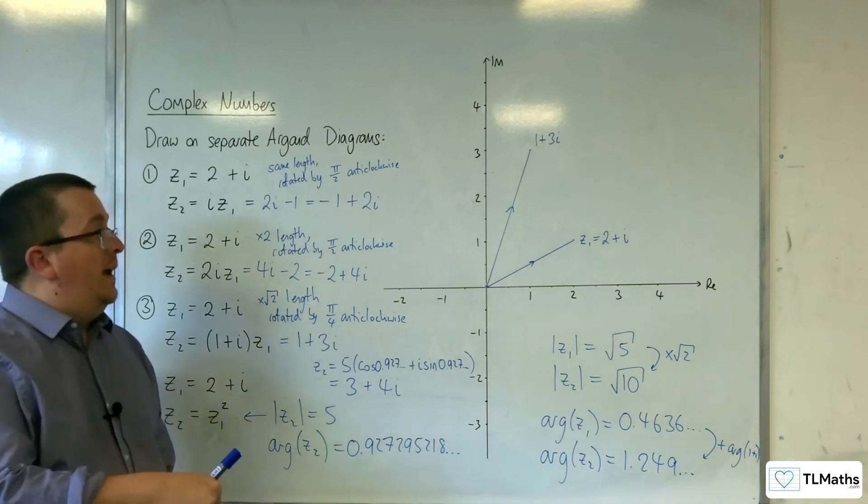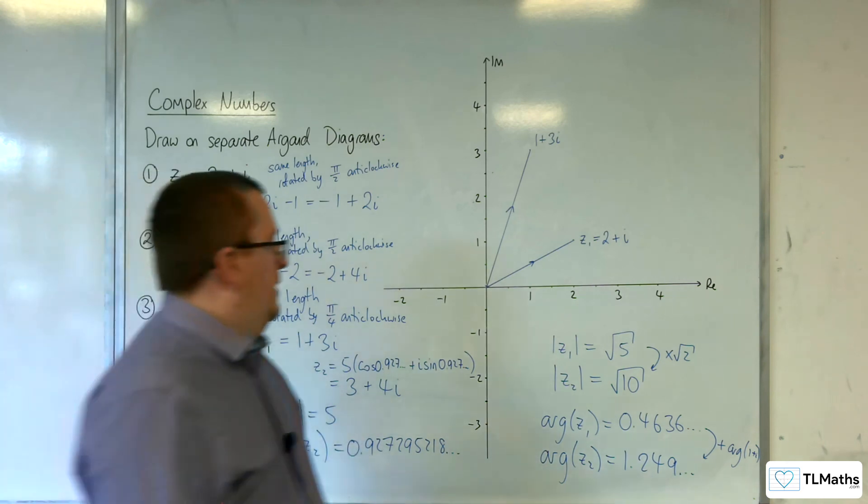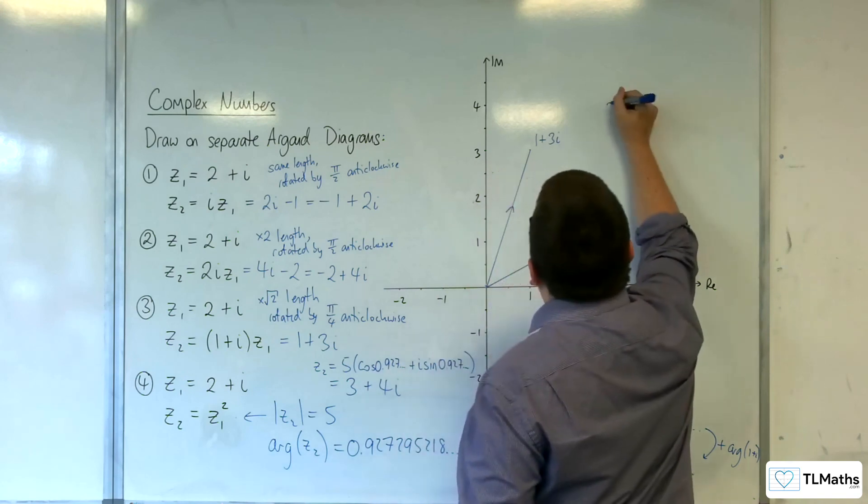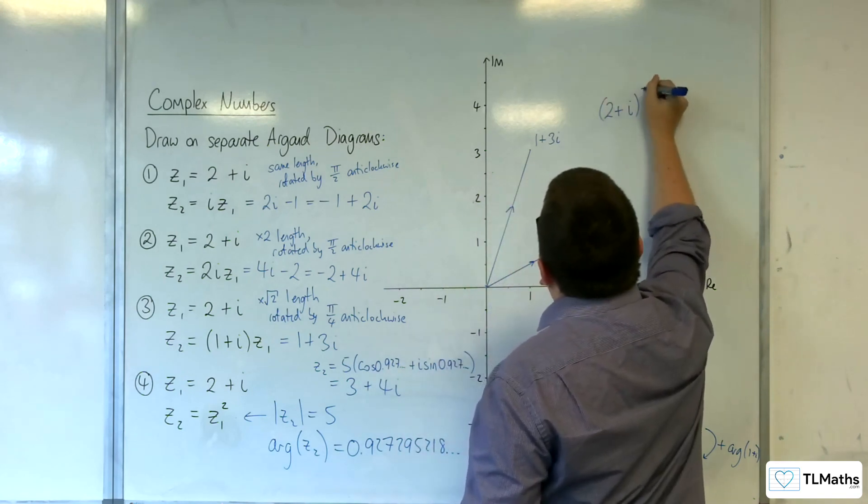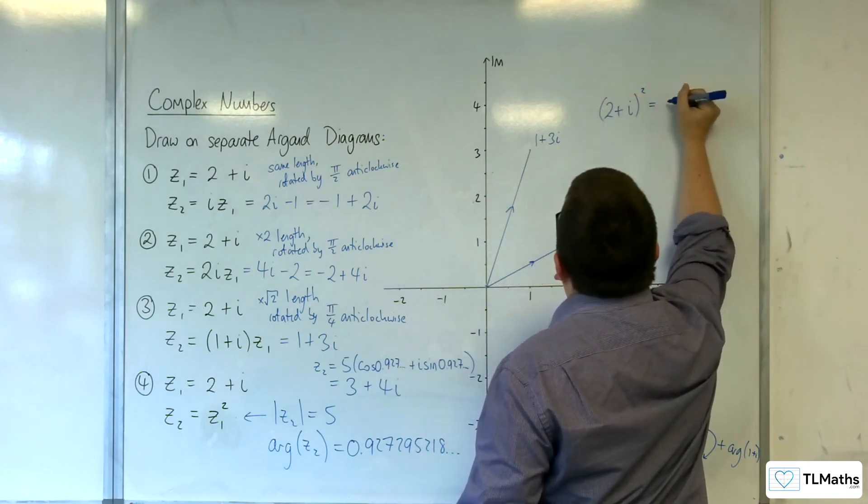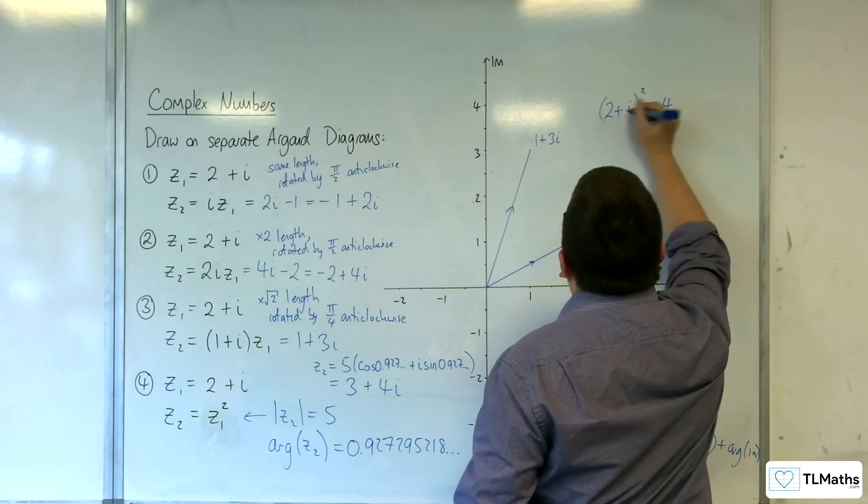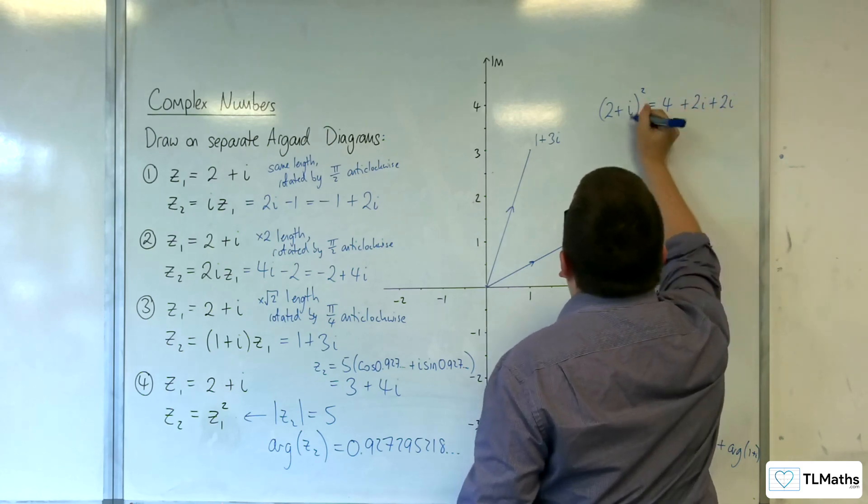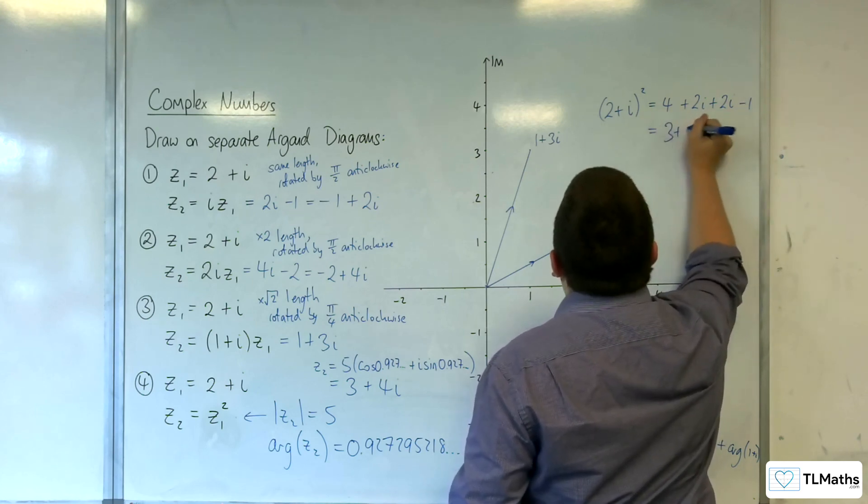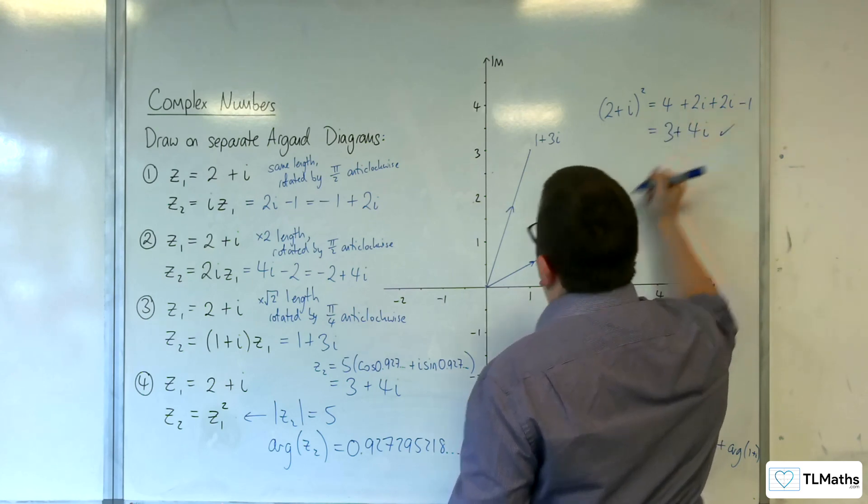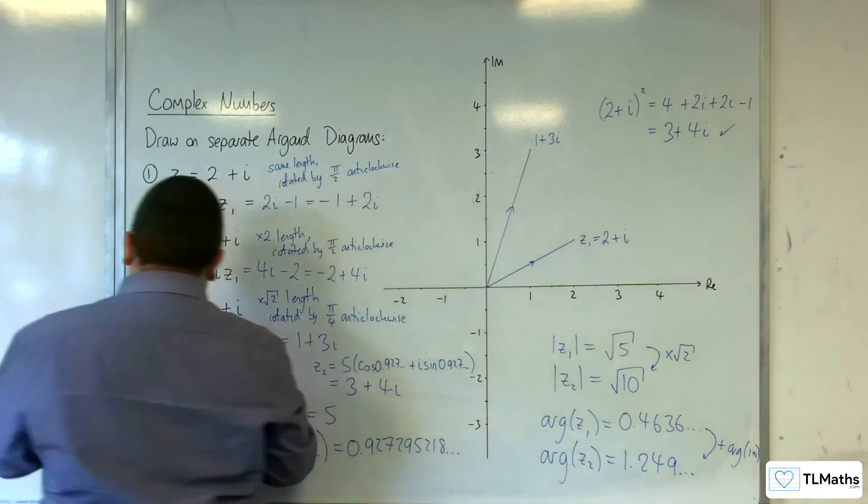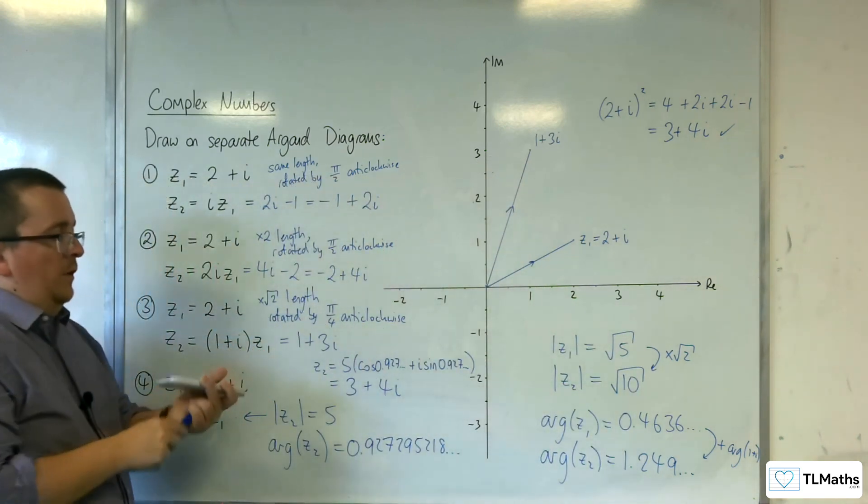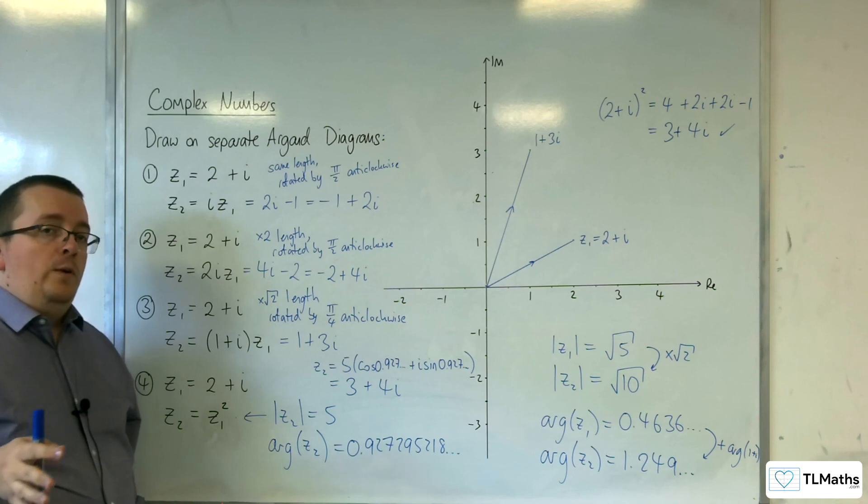Is 2 plus i squared 3 plus 4i? We get 2 times 2, we get 2i plus another 2i, and then we get i times i, and we get the 3 plus 4i.